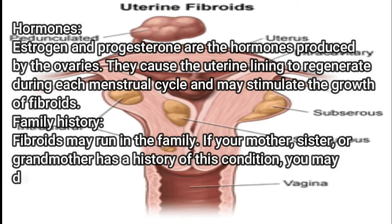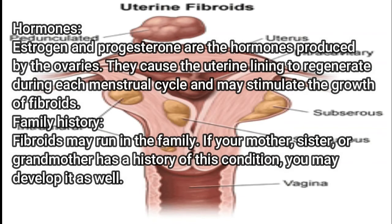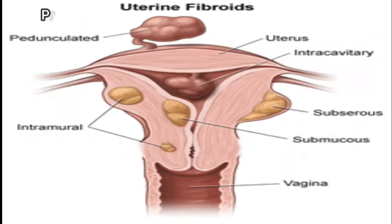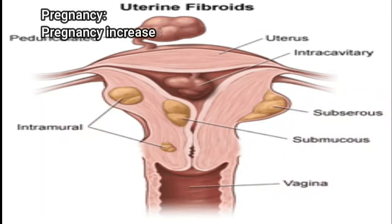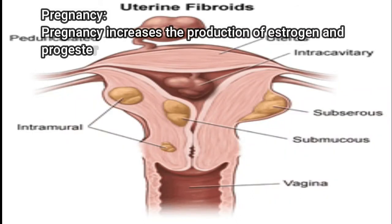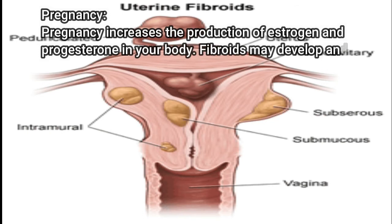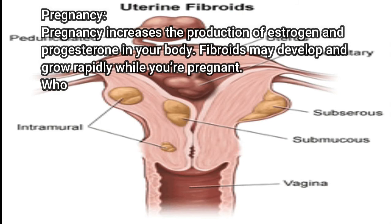If your mother, sister, or grandmother has a history of this condition, you may develop it as well. Pregnancy increases the production of estrogen and progesterone in your body. Fibroids may develop and grow rapidly while you're pregnant.